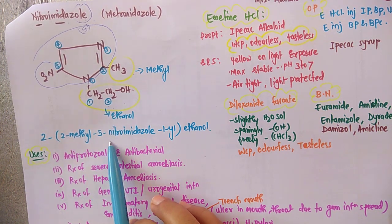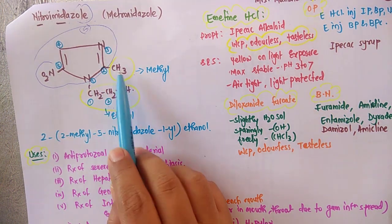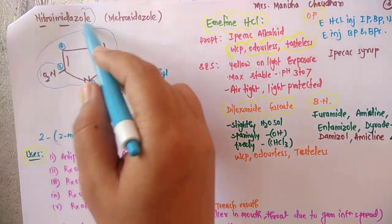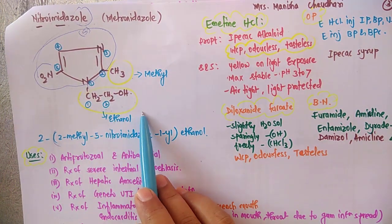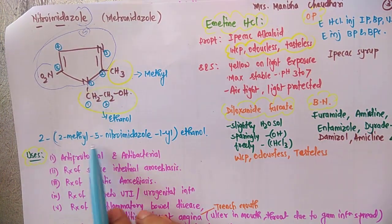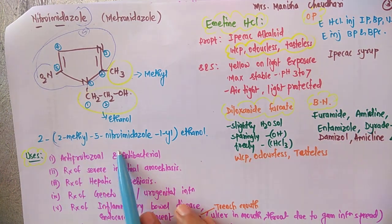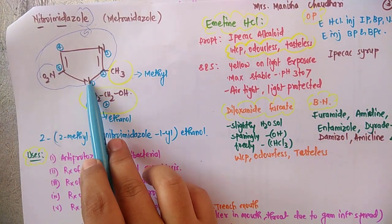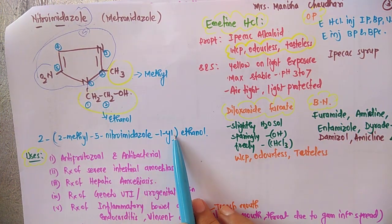Two-methyl, nitroimidazole. The second position has another substituent, that is methyl. We have written this in brackets. This whole ring, we have considered as parent. Two methyl, five-nitroimidazole. Five-nitroimidazole first yl, because there is a substituent on it.